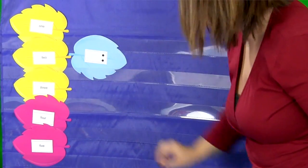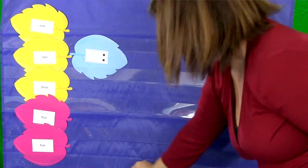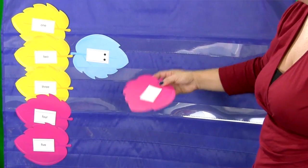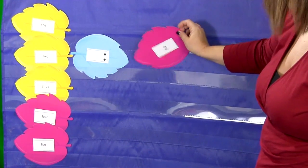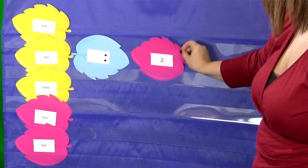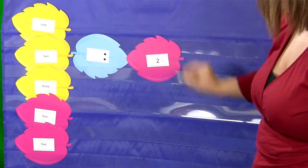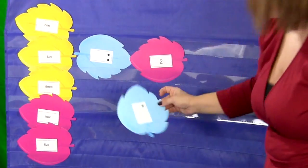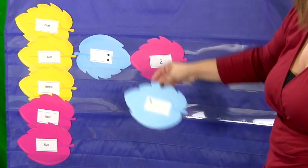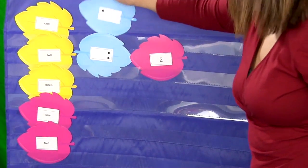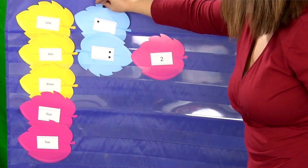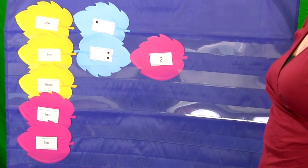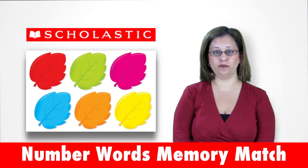For instance, you can create a small group sorting game using your standard pocket chart. Choose several number sets, placing one of each number to the far left and the rest of the cards in the bottom row. Then ask children to take turns drawing a number from the cards below and placing it in the appropriate row.